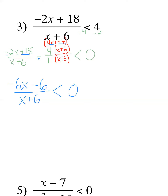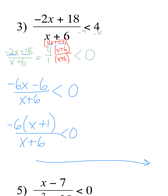Step 1 is done — one side is 0. Now factor what I can. From the numerator I can take out -6, leaving (x + 1). The denominator is (x + 6). So the critical values are x = -1 and x = -6. I absolutely cannot have -6 (zero in the denominator — that's out). Plugging in -1 gives zero in the numerator — is 0 < 0? No, it's not, so -1 is also excluded from the solution.